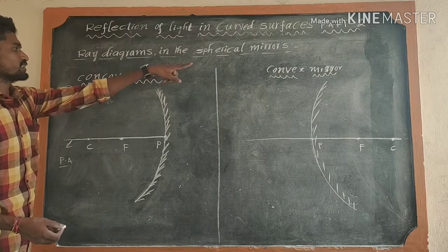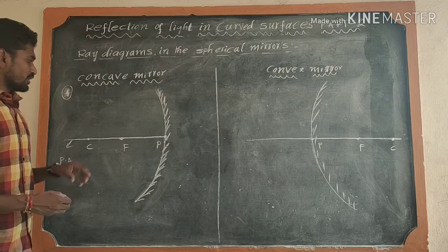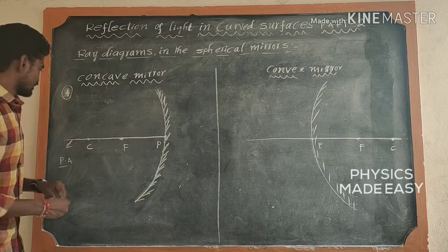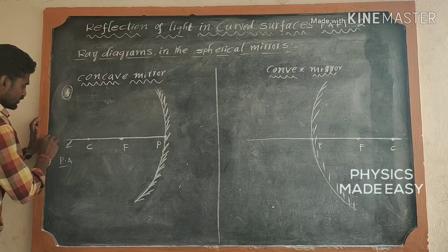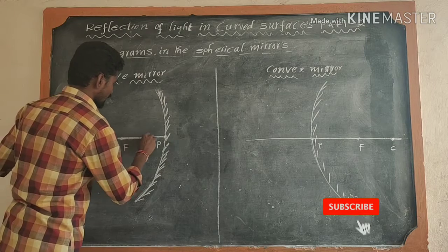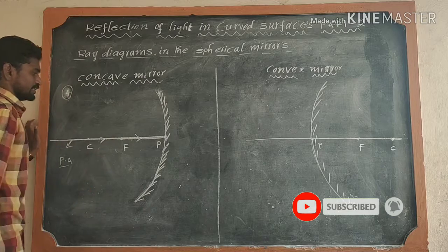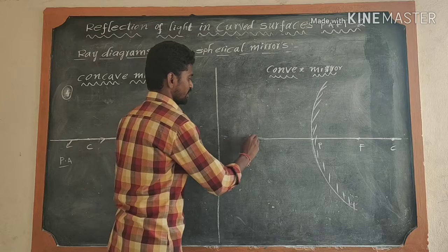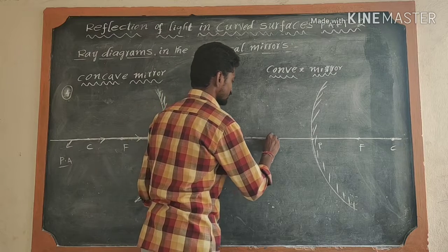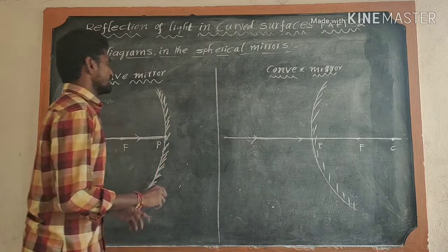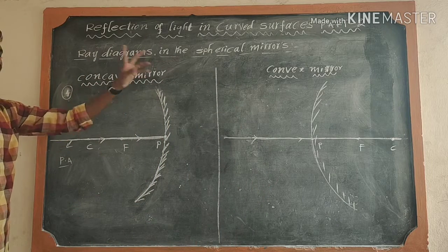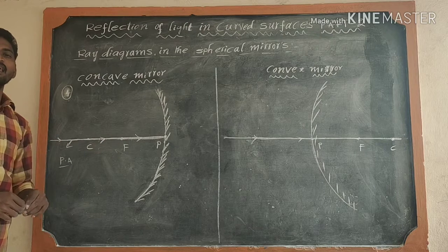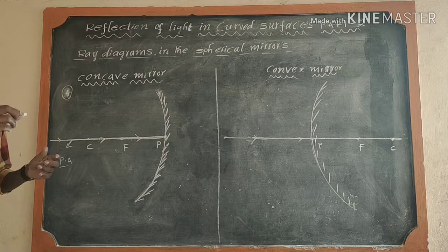This is the concave mirror, and that is the convex mirror in the fourth condition. In any situation, the light ray is passing through along the principal axis. This is the light ray passing through along the principal axis. In the spherical mirrors — both concave mirror and convex mirror — the light ray is undeviated when passing along the principal axis.